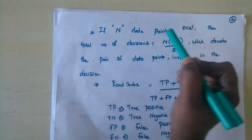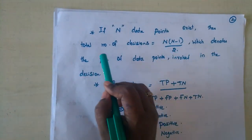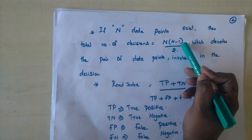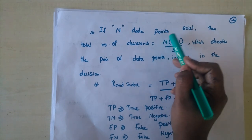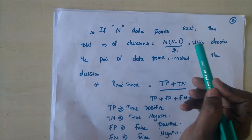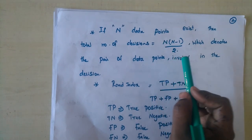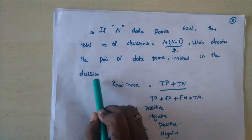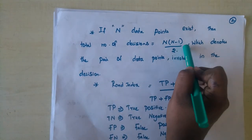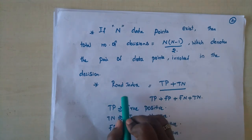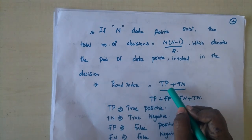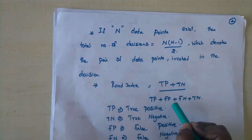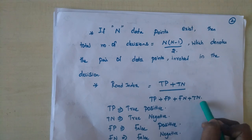Let's say we have n data points, and the total number of decisions — that means comparisons — is given by n×(n−1)/2. This is because that many pairwise comparisons are made among data points when building a cluster. RAND index is given by the formula: (true positive + true negative) / (true positive + false positive + false negative + true negative).